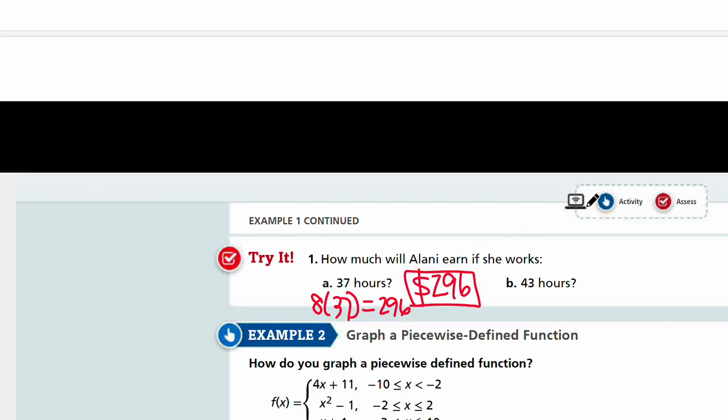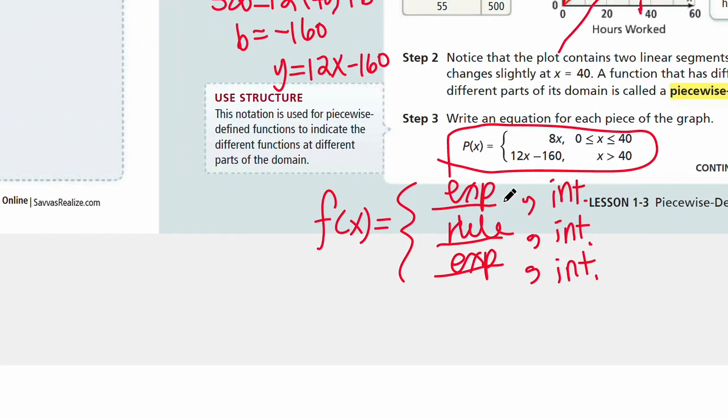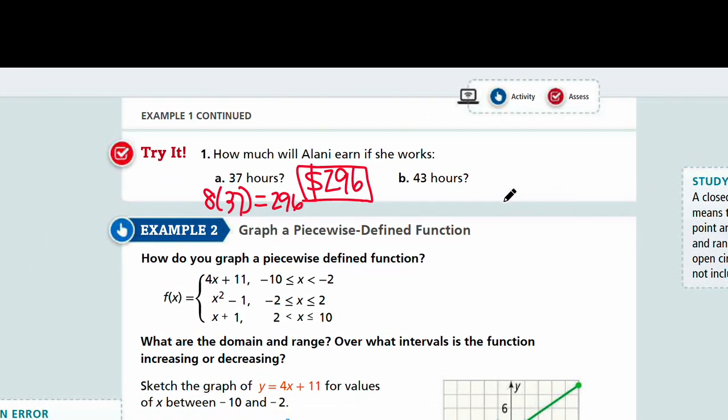What about 43 hours? Look at your graph. If it's greater than 40, you use 12x minus 160. This graph is going to extend. So use this equation: 12x minus 160. 12 times 43 minus 160 will be 356. She will earn $356 when she works 43 hours. Did you get everything right? If so, good job.